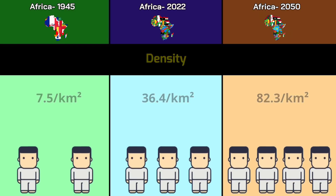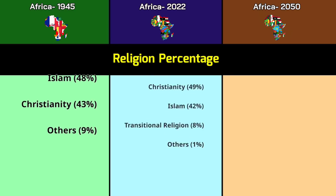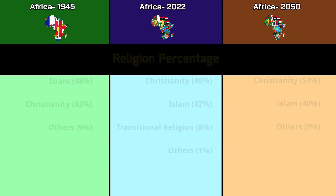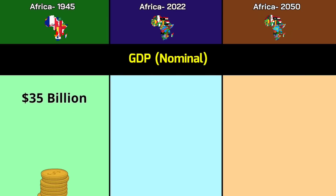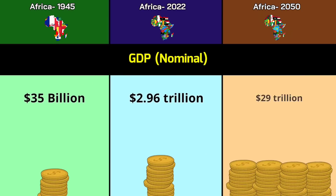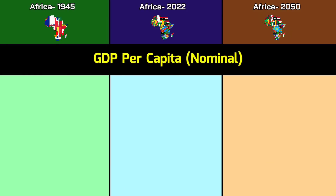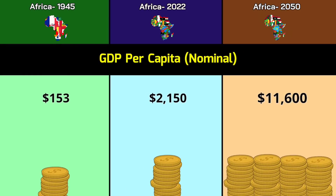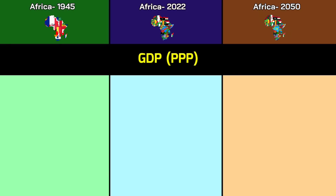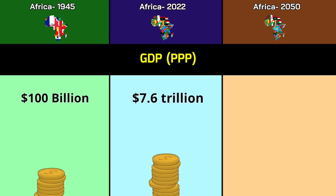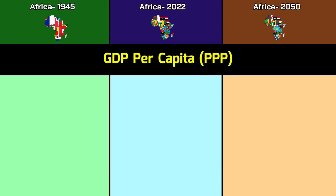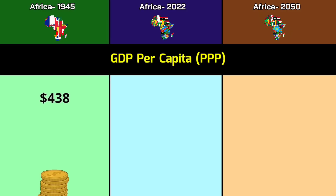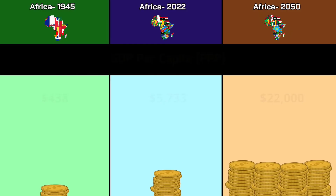Population density: 7.5 per km² in 1945; 36.4 per km² in 2022; 82.3 per km² in 2050. Religion: Christianity and Islam dominated across all periods. GDP nominal: 35 billion dollars in 1945; 2.96 trillion dollars in 2022; 29 trillion dollars in 2050. GDP per capita: 153 dollars, 2,150 dollars, and 11,600 dollars respectively.